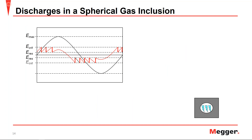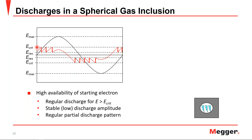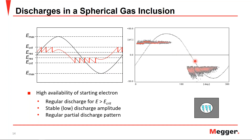Looking at discharges in a spherical gas inclusion with high availability of starting electrons: the electric field increases until it reaches the critical field, and since electrons are readily available, discharge takes place immediately each time the critical field is met. This continues through the polarity change and repeats. The result is a small-magnitude, evenly distributed partial discharge pattern. On the phase-resolved partial discharge display, we see low-magnitude discharges in a nicely evenly distributed pattern, primarily in the first and third quarter of the applied voltage.